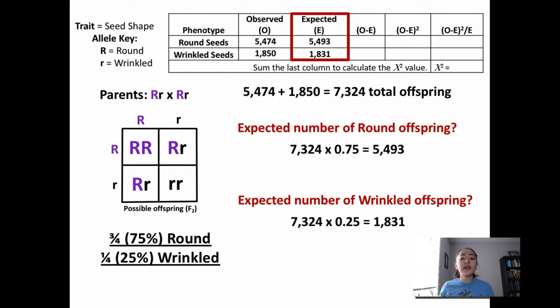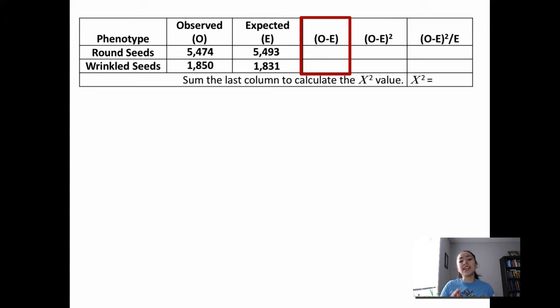After you have found the expected values, then you just fill out the rest of the table. First, I would take each observed value and subtract that from the expected value. 5,474 minus 5,493 equals negative 19. 1,850 minus 1,831 equals 19.